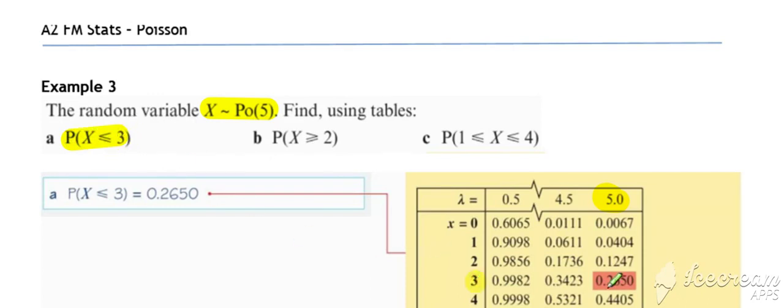We just read across from three and pick off our probability. Note, these are cumulative tables, so that 0.265 represents the cumulative values up to and including three. So the probability that x is zero, one, two or three all added together.